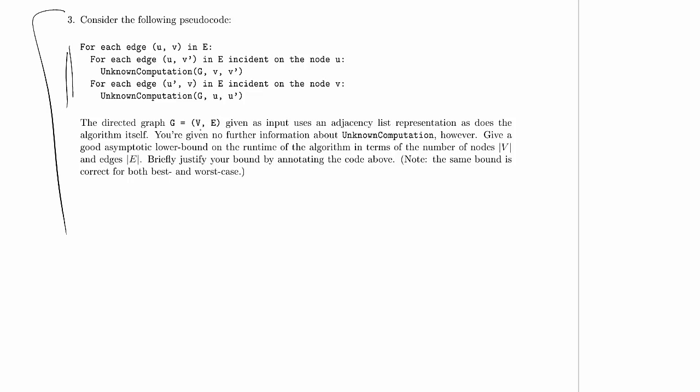We're told that this directed graph given as input uses an adjacency list representation, as does the algorithm itself, and we're given no further information about unknown computation. Unknown computation is called a couple of times. We don't know anything more about it, so this is probably the most important part of this problem. Since we don't know anything more about unknown computation, all we know is that it takes at least constant time.